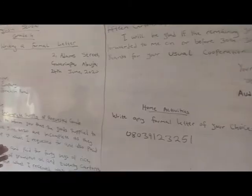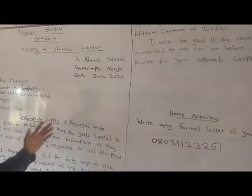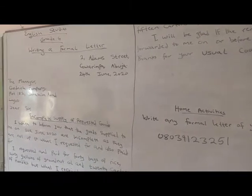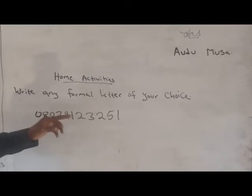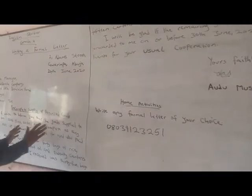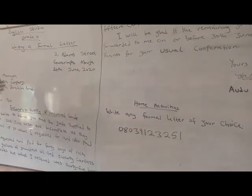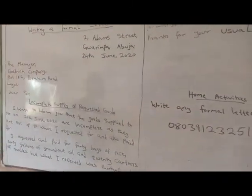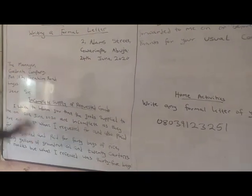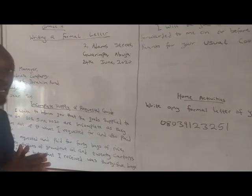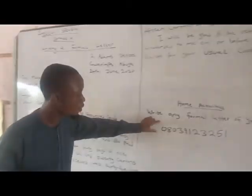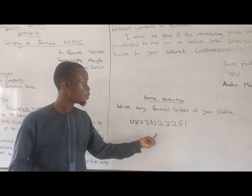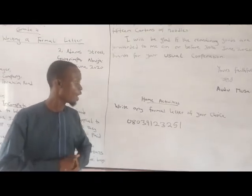Now you can see that this is a typical formal letter that we have on the board. With this, you should be able to write your own formal letter. Now this is what you will do: to be sure that you can write yours, you are going to write any formal letter of your choice. Like what I have here is a formal letter of my choice — I decided to take the manager as my recipient and use this address as my recipient address. So also, if you think of any formal letter of your choice to write, write it, direct it to whoever you want, and forward it to my WhatsApp number which is 08039123251. I am expecting it.